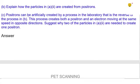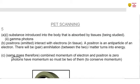Then the last question, positrons can be artificially created by a process in the laboratory, that is, the reverse of the process in B. So the reverse of annihilation is pair production. This process creates both a positron and an electron, moving at the same speed in opposite directions. Suggest why two of the particles in A2 are needed to create one positron. Combined momentum of electron and positron should be zero, because they approach each other, the positron and the electron have the same mass. And since they are moving in opposite directions, their resulting momentum is supposed to be zero. So the photons that are going to be produced have momentum, so they must also be in opposite directions, so that we conserve momentum.